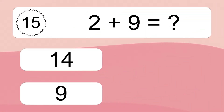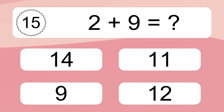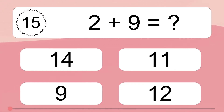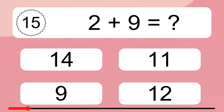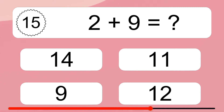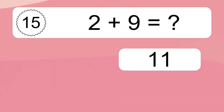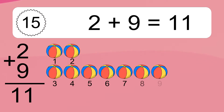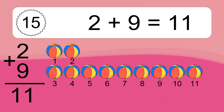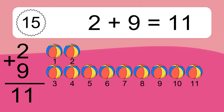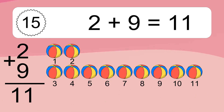2 plus 9 equals what? 2 plus 9 equals 11. Let's count it: 1, 2, 3, 4, 5, 6, 7, 8, 9, 10, 11.